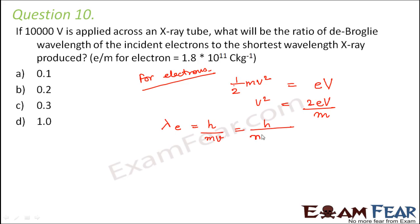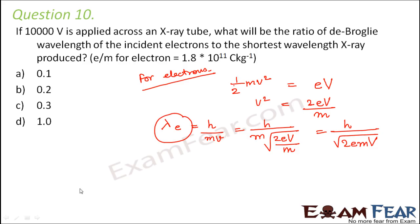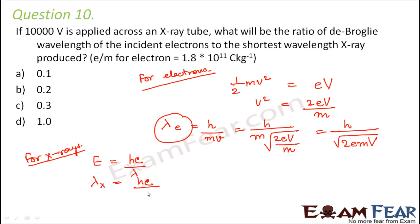This will be equal to h/m into V, where V = √(2eV/m). So this is equal to h / √(2emV). This is the wavelength of the electrons. Now for the X-rays, the energy is E = hc/λ, so λ_X-ray = hc/E.